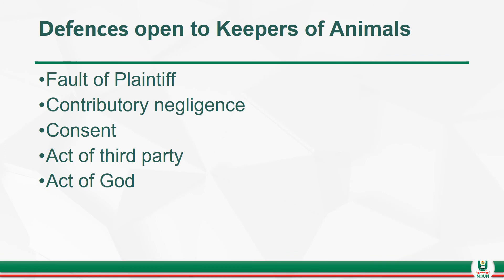What are the defenses open to keepers of animals? First is the fault of the plaintiff. Second is contributory negligence — just like for strict liability for non-natural user. Third is consent. Fourth is the act of a third party, and of course an act of God. Note, however, that the extent to which these defenses may be available may be impacted by the nature of the animal being kept. If it is a dangerous animal, the defenses may not be so readily available, because the owner ought to have obtained a license and ought to know he must go the extra mile to rein them in.